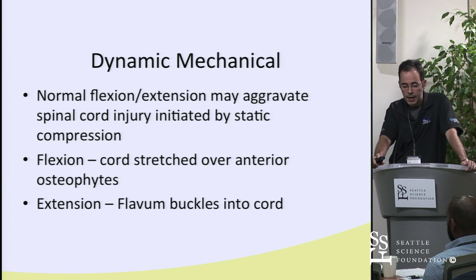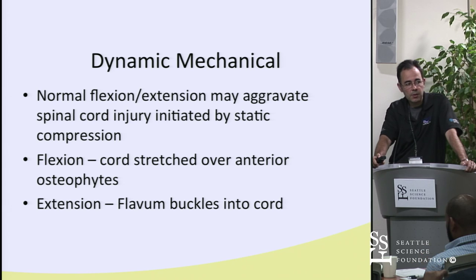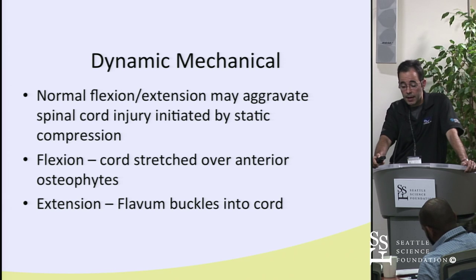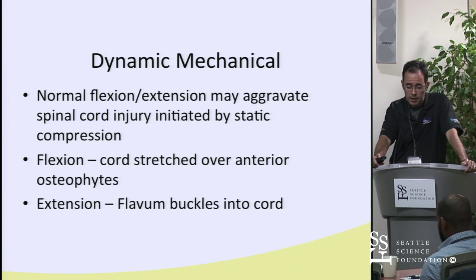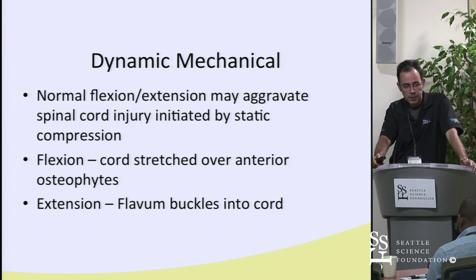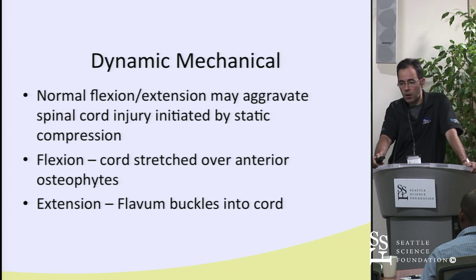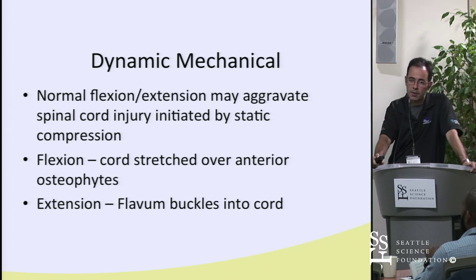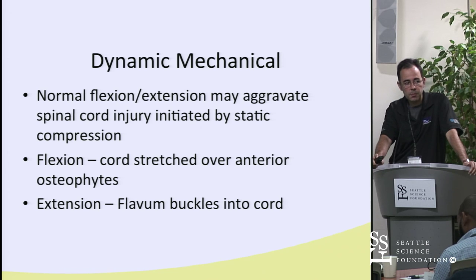With coexisting ligamentous hypertrophy, extension and buckling of the ligamentum flavum results in cord compression. With anterior disease and osteophytes off the back of the disc base, flexion compresses the cord. Patients with degenerative disease often have circumferential pathology, and all of these factors play a role in deciding whether to do anterior, posterior, or both.